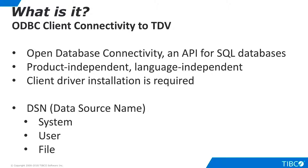The DSN contains information such as the name, directory, and driver of the database, and may include the ID and password of the user. A separate DSN is created for each database. There are three kinds of DSNs: User DSNs, sometimes called machine DSNs, system DSNs, and file DSNs.